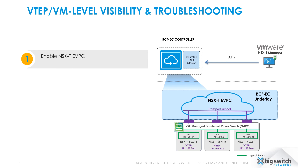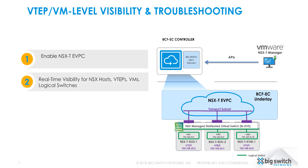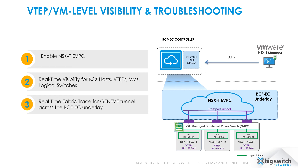In the rest of this video we will see the easy steps to enable the NSX-T eVPC in the Big Cloud Fabric controller. Then we will focus on real-time visibility for NSX-T hosts, VTEPs, VMs, and logical switches, all from the Big Cloud Fabric controller GUI. Lastly, we will see how we can run the fabric trace for Geneve tunnels across the Big Cloud Fabric underlay.